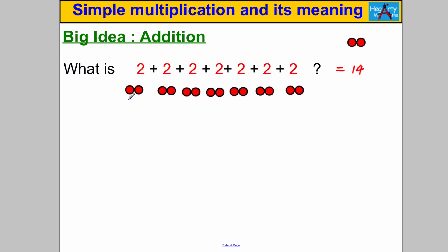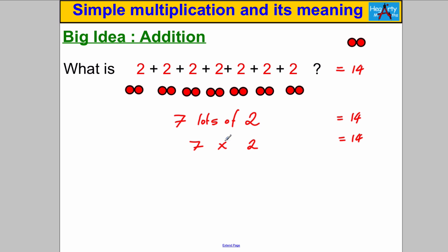Another way of writing this — how many twos have we got? You can see there's a 2, another 2, a 2, a 2... we've got 7 lots of 2. So 7 lots of 2, and we know the answer is 14. A mathematician writes 7 lots of 2 as 7 times 2, or 7 multiplied by 2, or the product of 7 and 2 is 14.